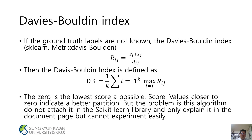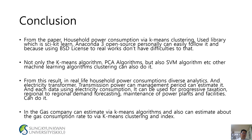Davies-Bouldin index: If the ground-truth labels are not known, the Davies-Bouldin index is defined as dbk = (1/k) * Σ(i=1 to k) max(i≠j) Rij. Zero is the lowest score; a score value close to zero indicates a better partition. However, this algorithm is not attached in the scikit-learn library and is only explained in the documentation page but cannot be explained easily. Household power consumption via K-means clustering uses the scikit-learn library, which is open source and uses a BSD license.